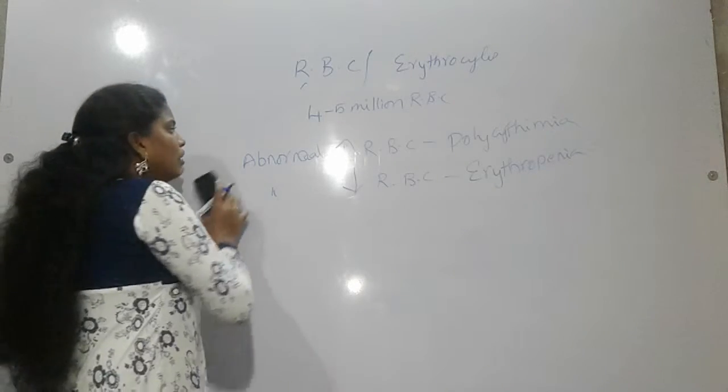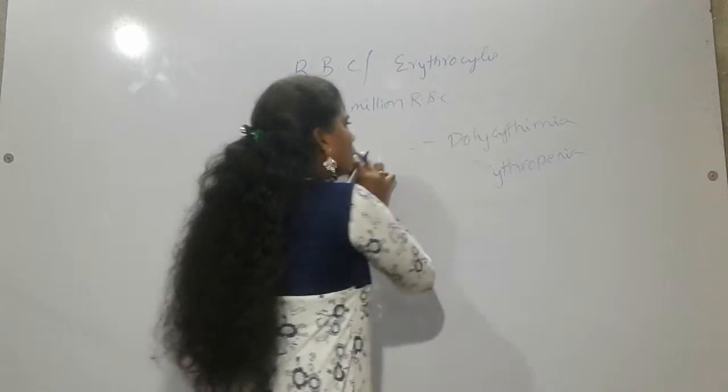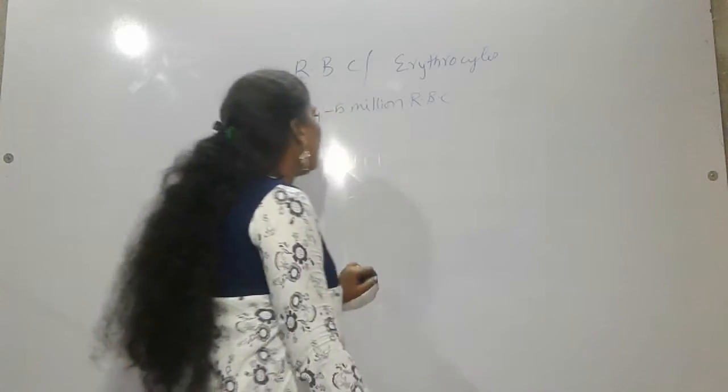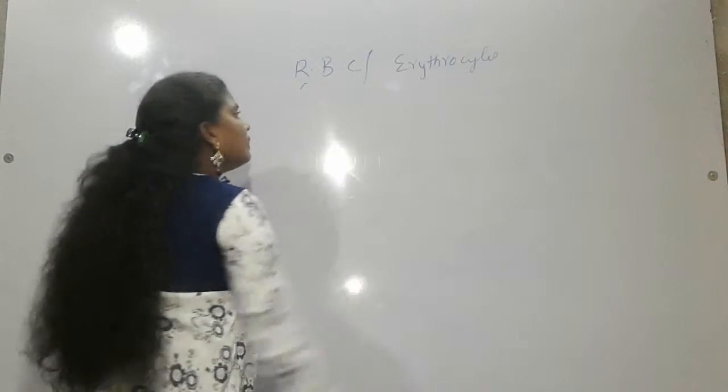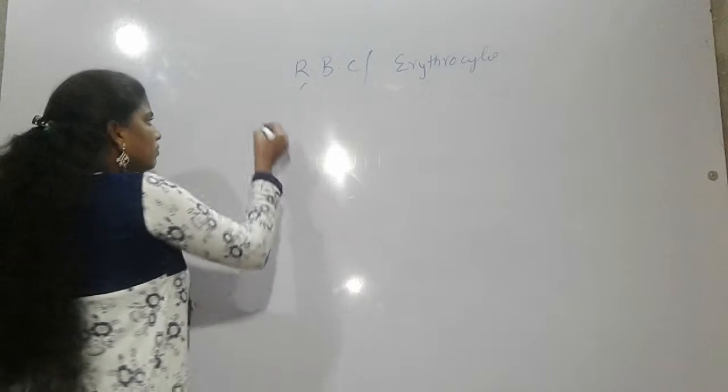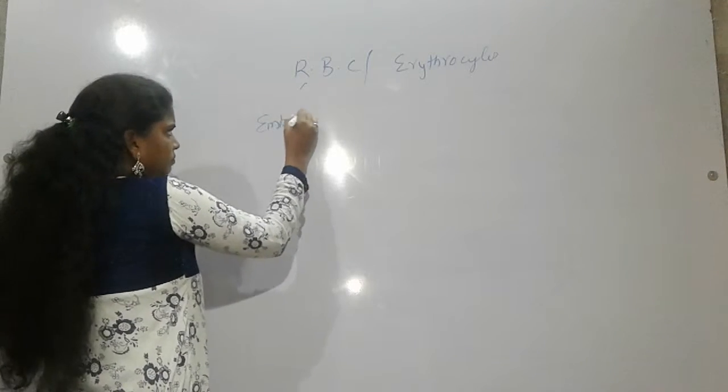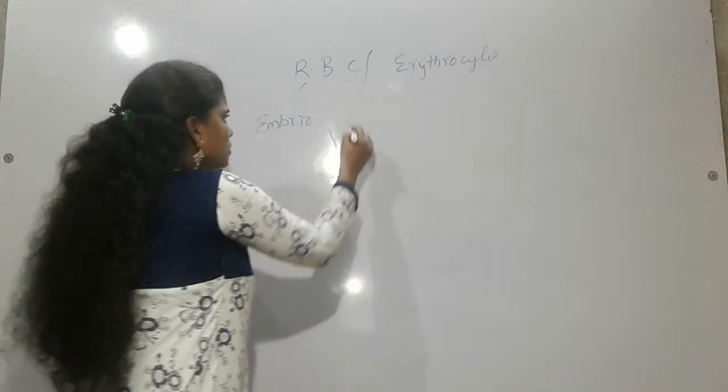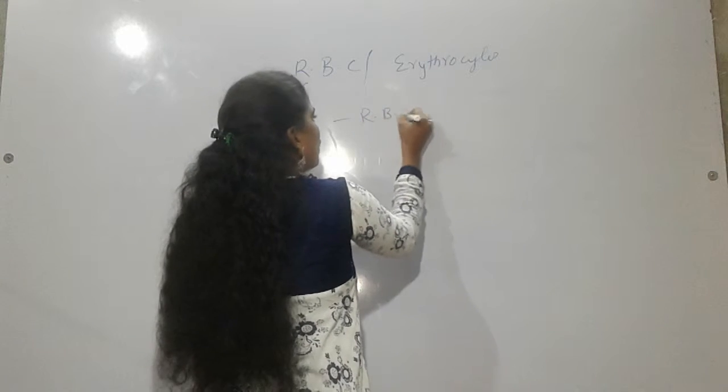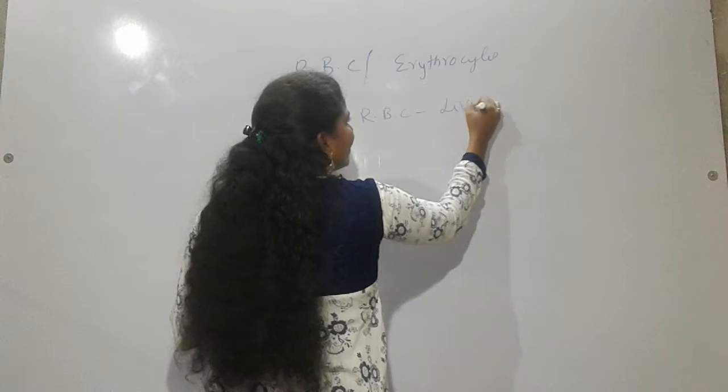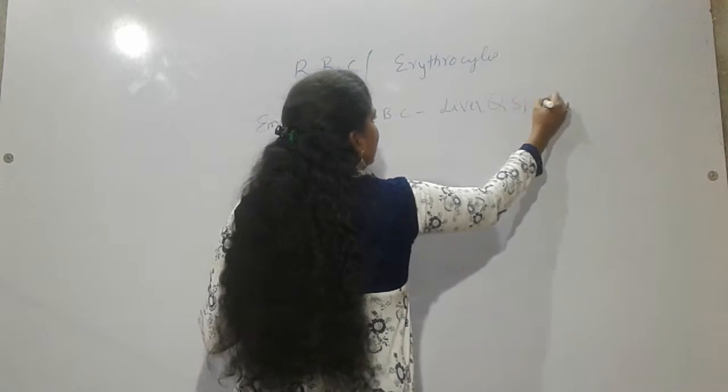Where will RBC be forming? RBC will form in the embryo. For embryo, the formation of RBC will occur in liver and spleen.